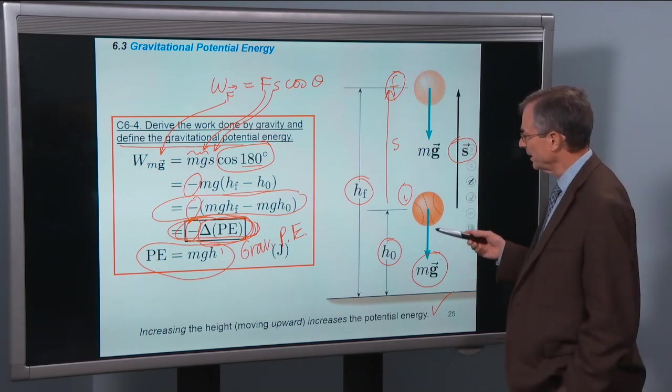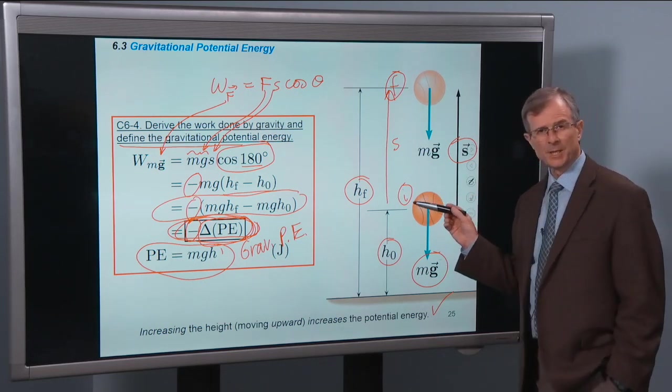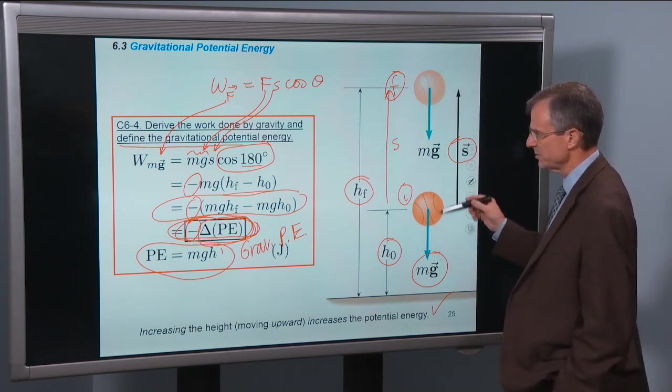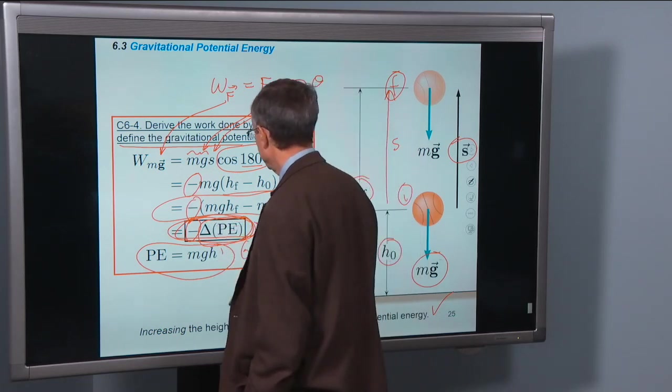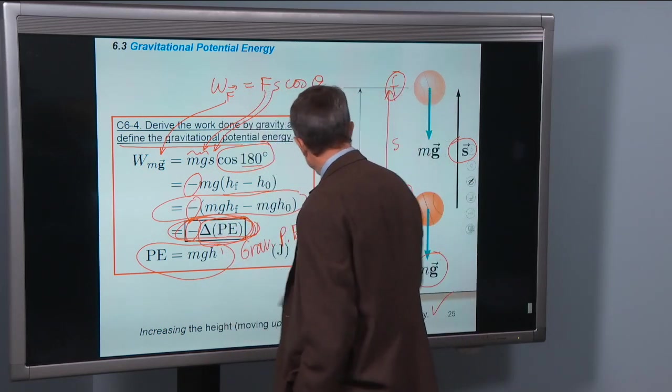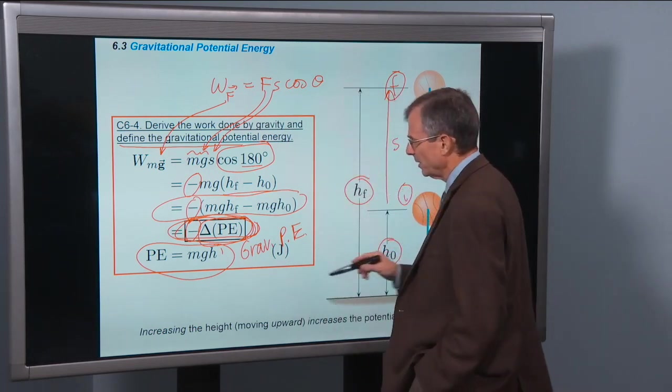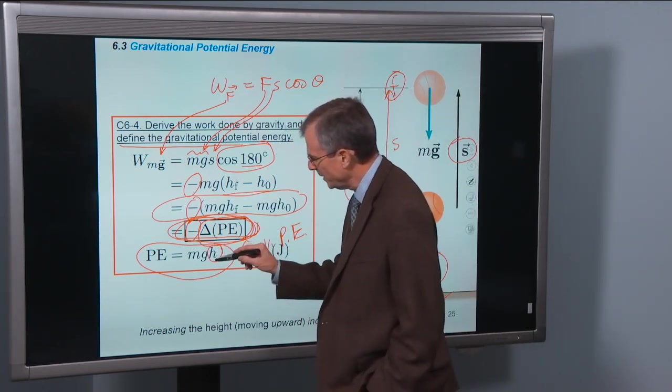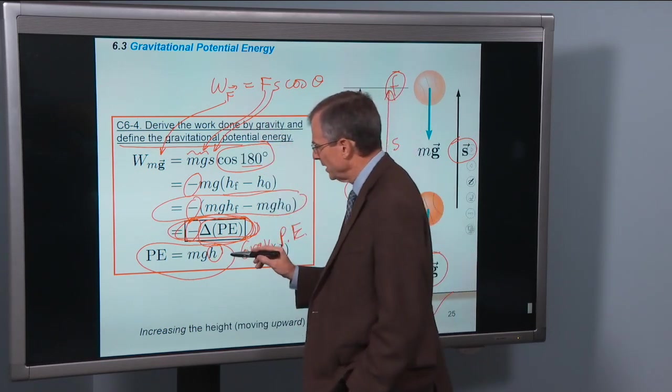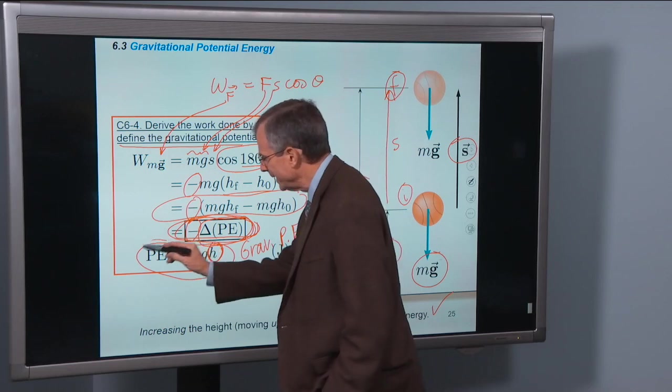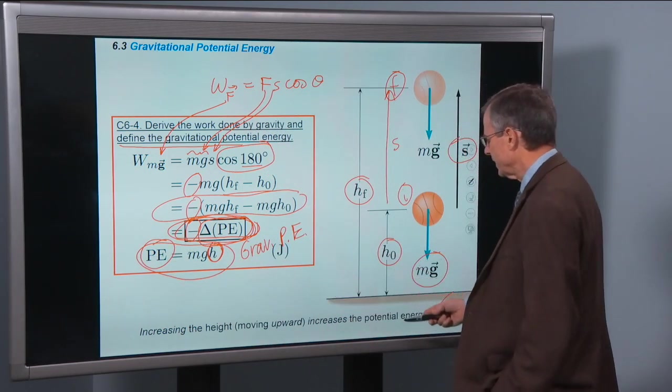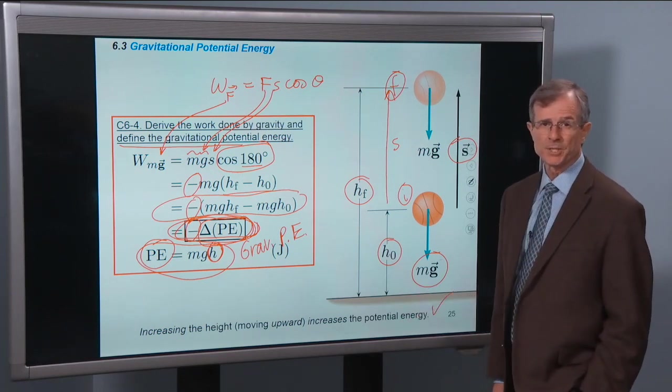Well, in this particular example, my initial position was lower than my final position. And what happened to the potential energy, I'm sorry, as we go from here to here, we're increasing the height. From h0, which is low, to hf, which is high. And so I'm increasing this height and increasing the gravitational potential energy. So increasing the height increases the gravitational potential energy.